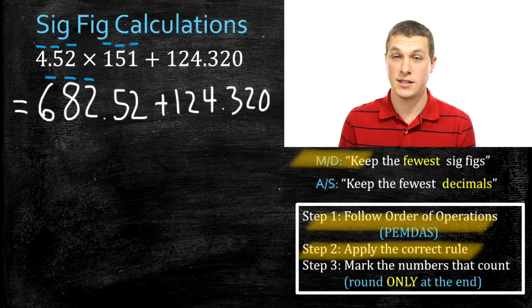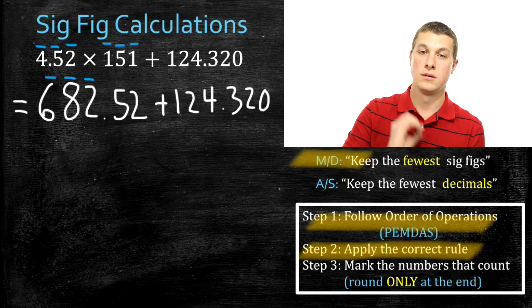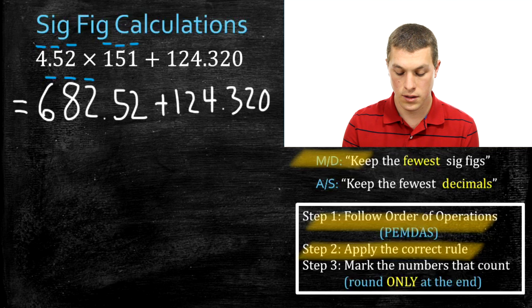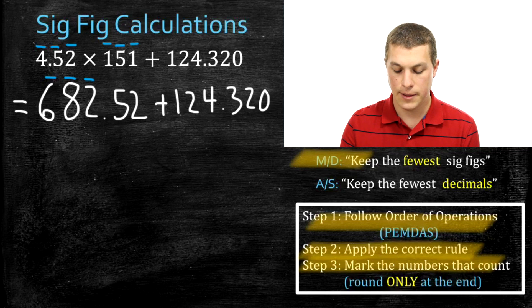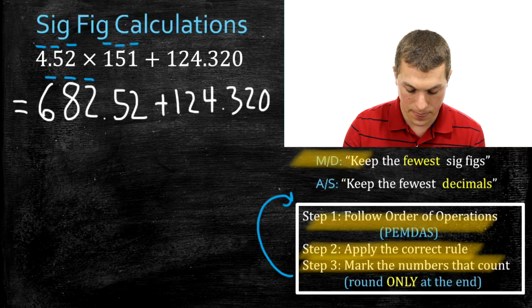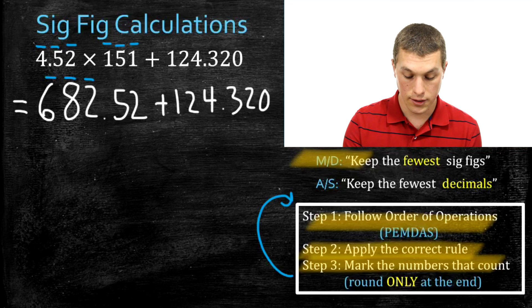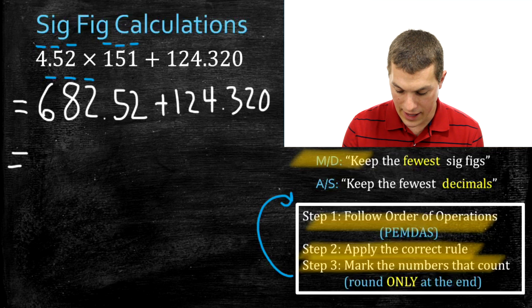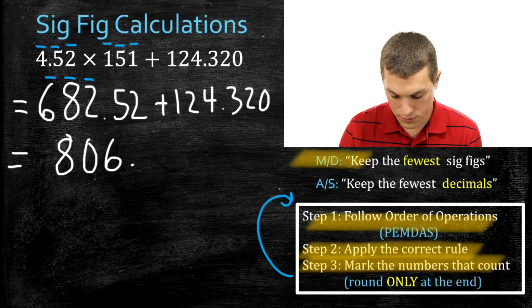The issue is that only the six, eight, and two count. If we were to round this number now, it would be 683 with no decimal points. So when I do addition and subtraction next, I'm going to count this number as if it had zero decimal places. Now I've marked those numbers that count — that's step three. We just go back to the top and follow order of operations again, which tells us to add those two numbers together.